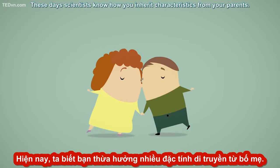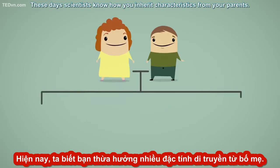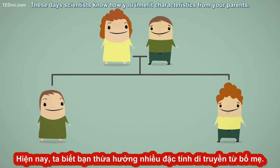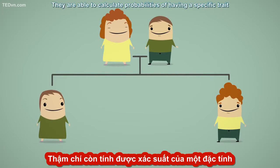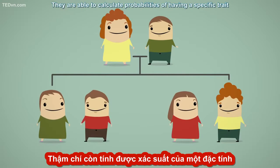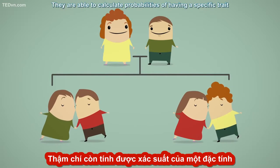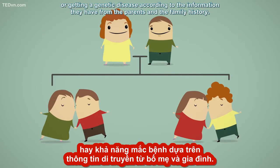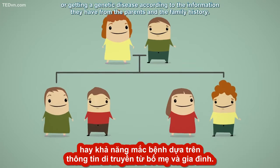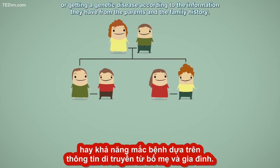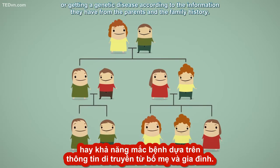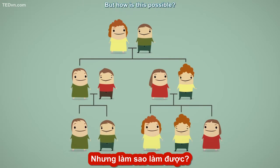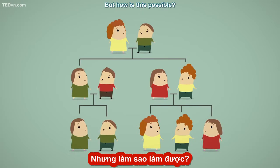These days, scientists know how you inherit characteristics from your parents. They're able to calculate probabilities of having a specific trait or getting a genetic disease according to the information they have from the parents and the family history. But how is this possible?